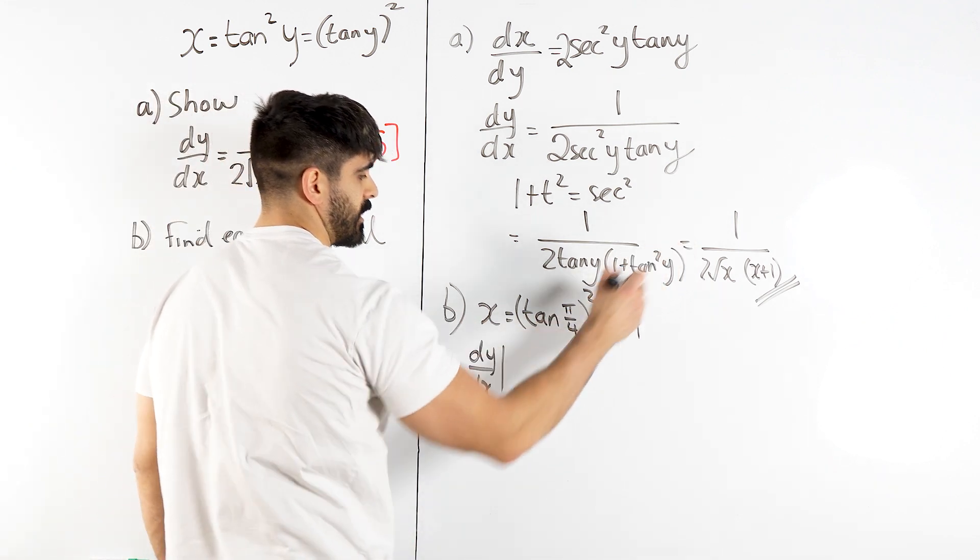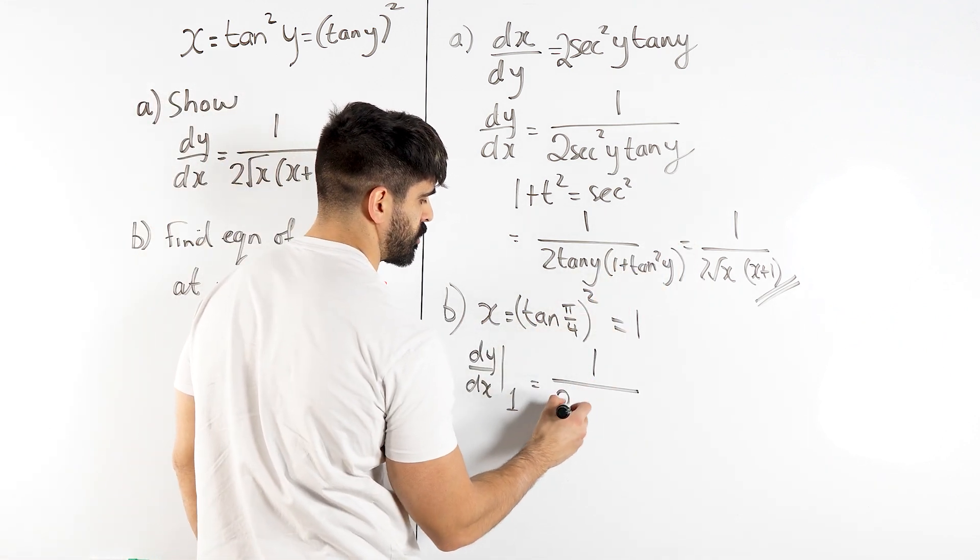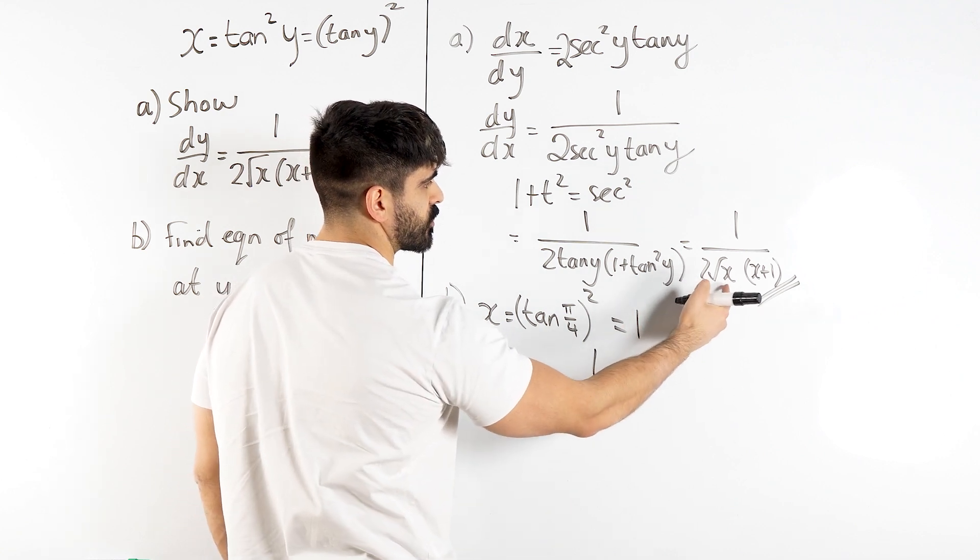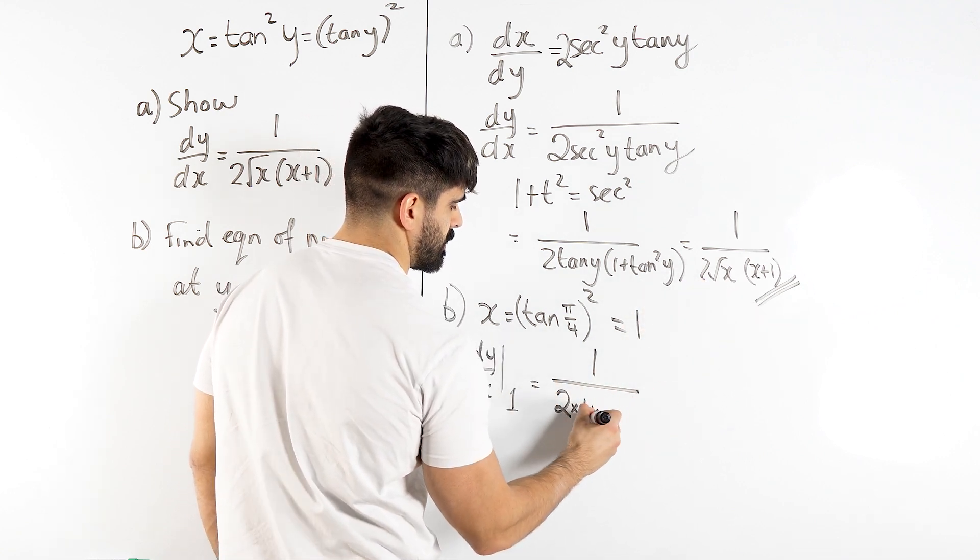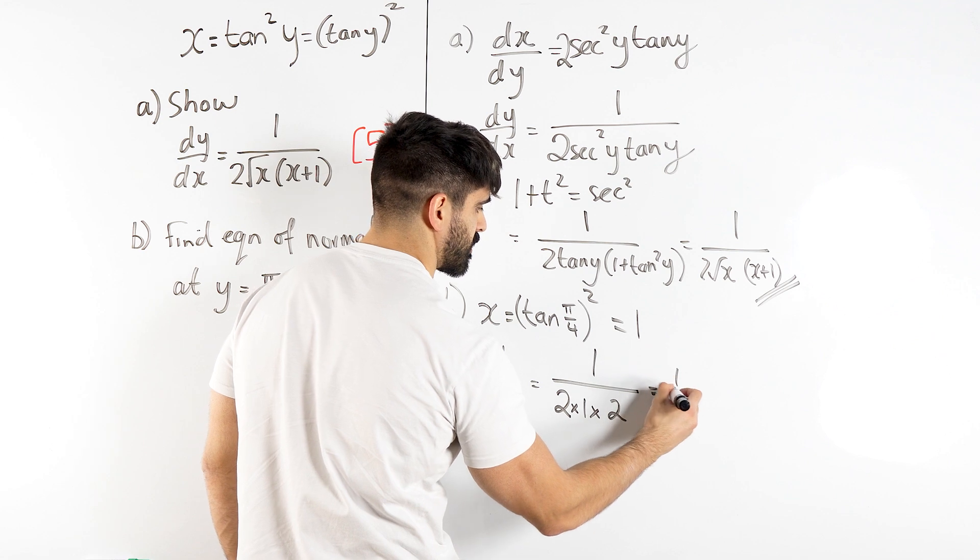What do we get? We get 1 over 2 times 1, root of 1 is just 1, times 1 plus 1, which is 2, so we get a quarter.